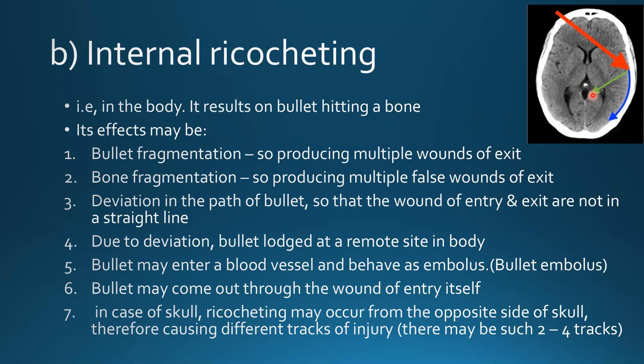Sometimes a bullet may enter a blood vessel and behave as a bullet embolus. Sometimes the bullet may exit through the wound of entry itself. In the skull, ricochet may occur from the opposite side causing a different tract of injury; two to four tracks of ricochet may be seen in the skull.